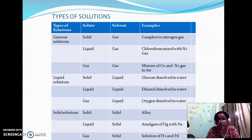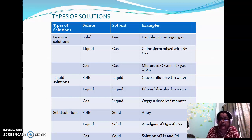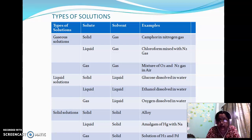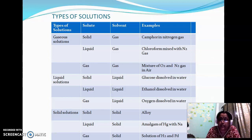Next category: solid solution, when both solute and solvent are solid. Examples are different types of alloys. Next, liquid solute and solid solvent, where we find different types of amalgam — mercury present along with sodium or other metals. Next, when gaseous solute is used in solid solvent, the example is solution of hydrogen over palladium. Hydrogen gas is adsorbed over palladium or platinum metal.